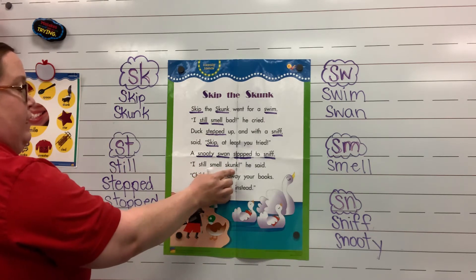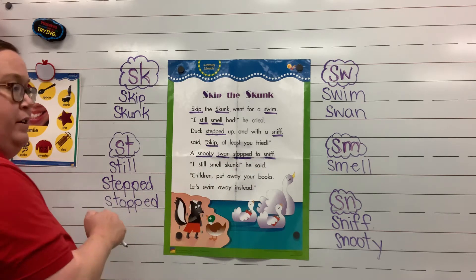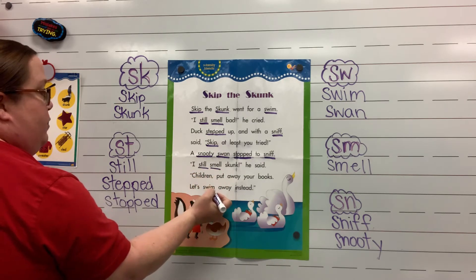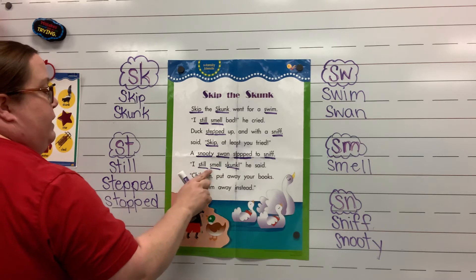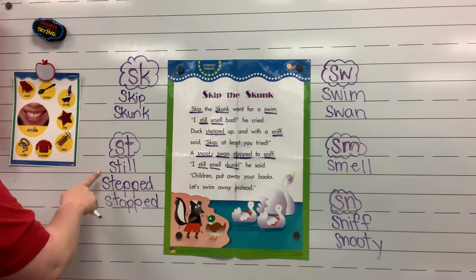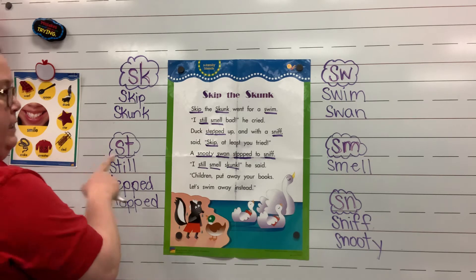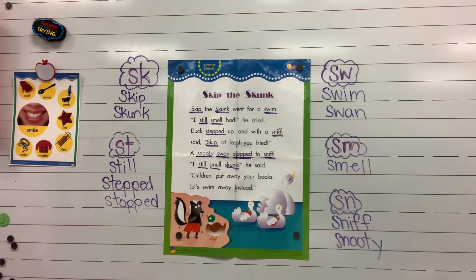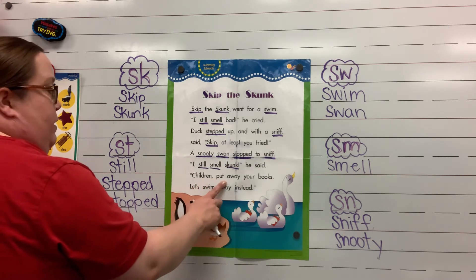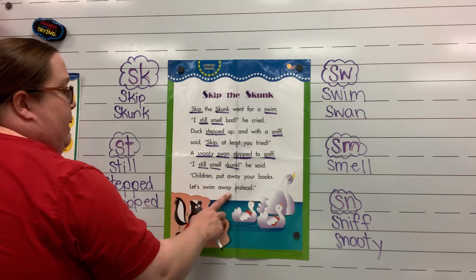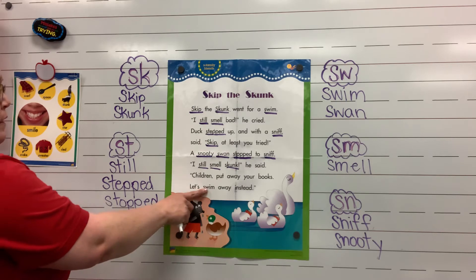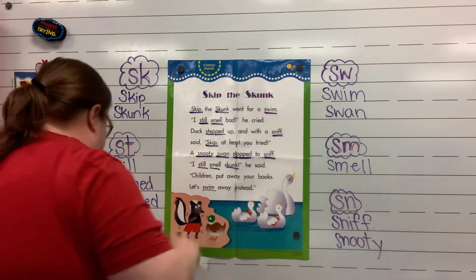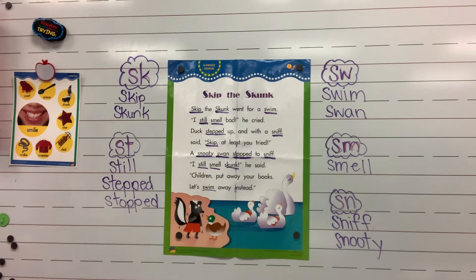I still smell skunk, he said. Still, smell, and skunk — but still, smell, and skunk are all already on our list. Children, put away your books. Let's swim away instead. Swim — good job, and we already have that one on our list too. Good job picking out those S-Family Blends!